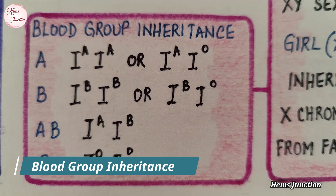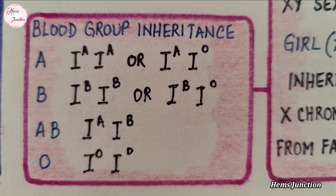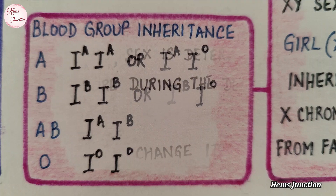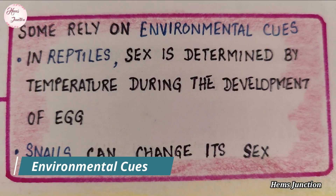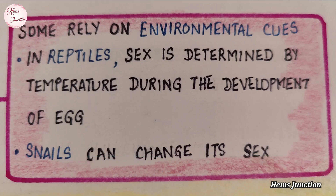Blood group inheritance. In some organisms, sex is determined by environmental factors like temperature.